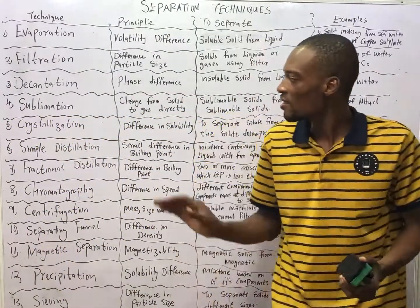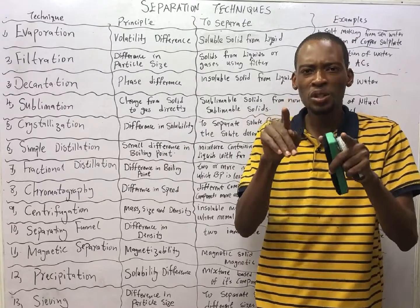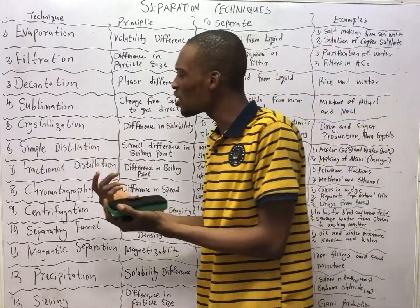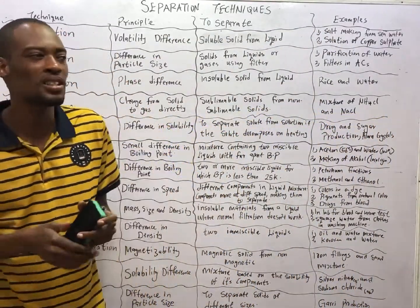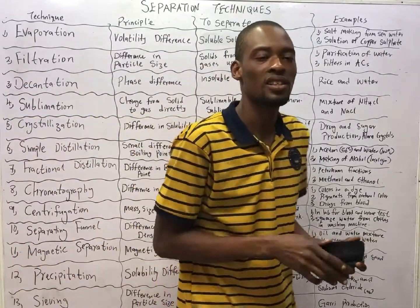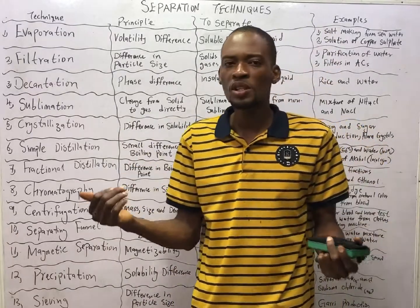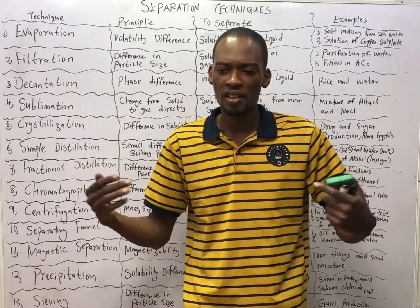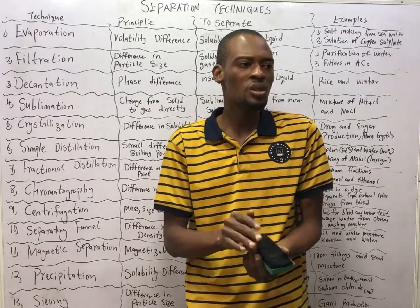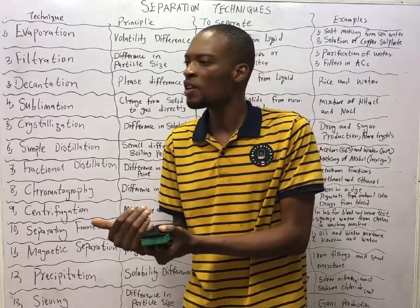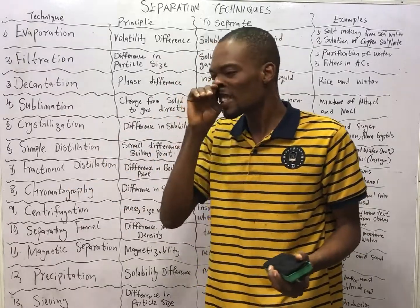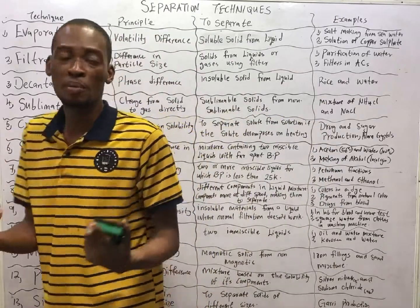The next one is crystallization. Crystallization is a separation technique used when the purity of the substance or product is very important. For example, in sea water, when you heat the salt solution, the water evaporates but some particles of salt may also evaporate, leaving behind salt that may not be in a pure form. So you have to purify or filter that salt to remove impurities. The aim of crystallization is to bring out the crystal — the pure form of the substance.